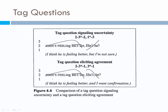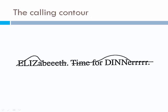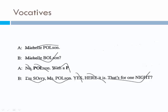We have the calling contour. For example, you are in the kitchen calling your daughter to come have dinner — you yell: 'Elizabeth! Time for dinner.' This is the contour for calling someone. Vocatives — when talking about names: 'Michelle Paulson.' 'Michelle Balson?' 'No — Paulson, with a P.' 'I'm sorry, Miss Paulson.' 'Yes, here it is.' You have a different intonation pattern depending on what you're emphasizing.